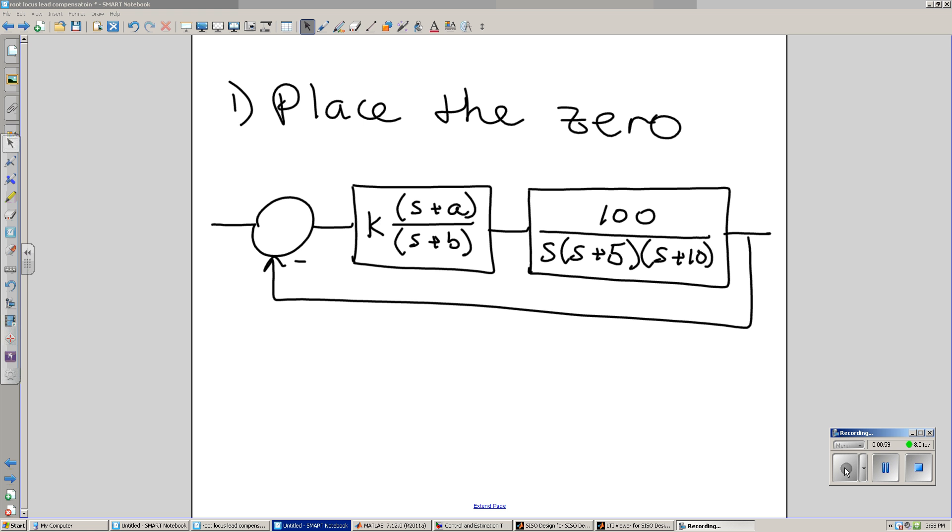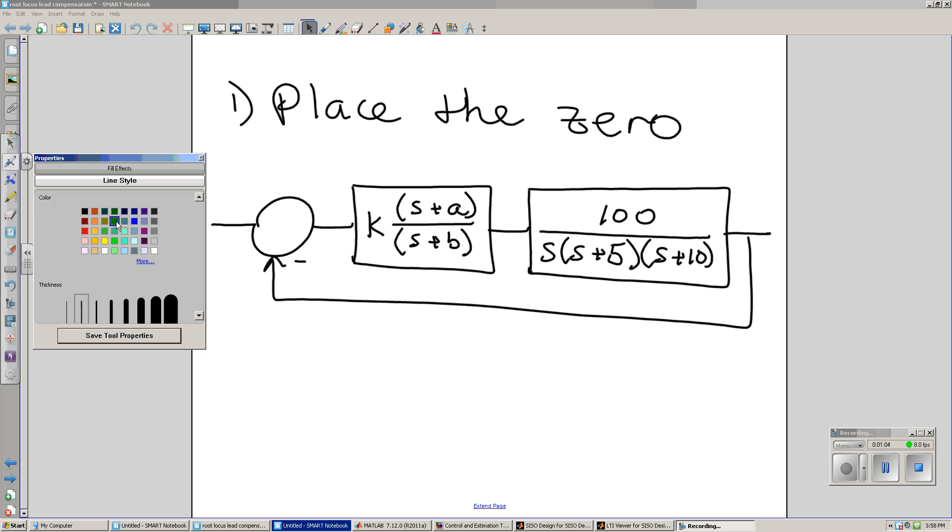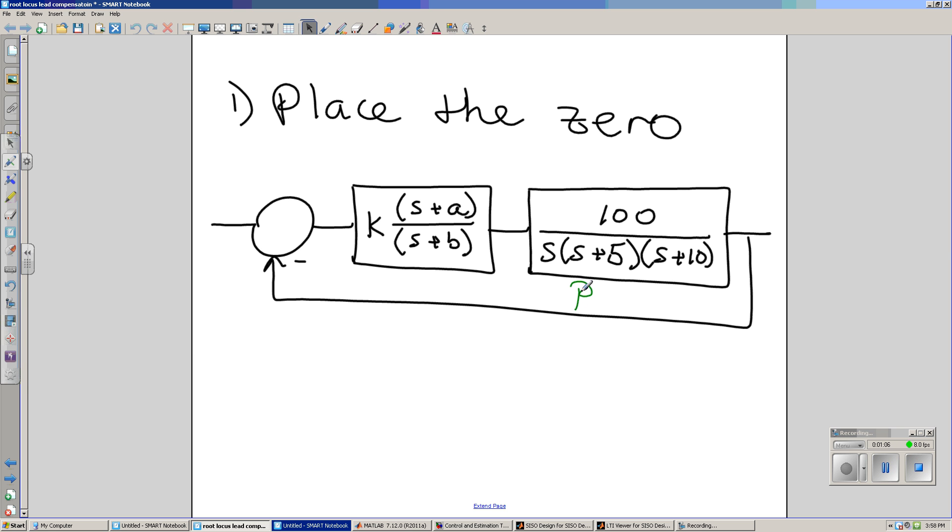As an example, let's look at the following cubic system for your plant. So here's your plant. It's a type 1 system, no error for step input. Closing the feedback loop, I get a response, but suppose it's not fast enough.